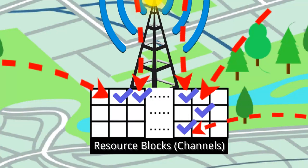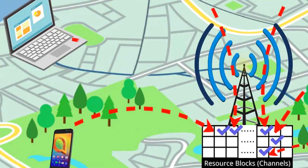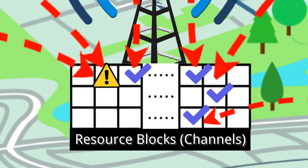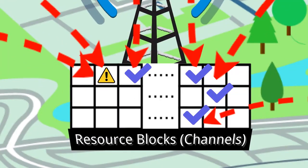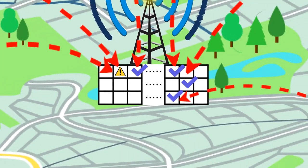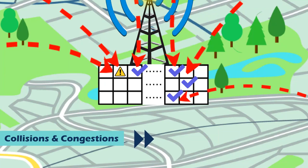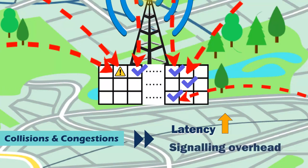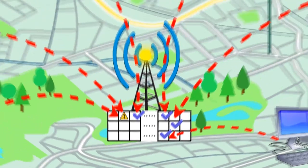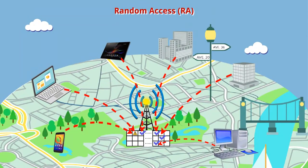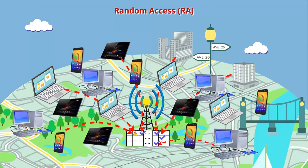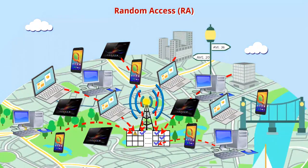But due to that, there is a high chance for two devices to request the same channel. This results in collisions and congestions in the control network. That's just the beginning of problems in random access. Ultimately, these collisions and congestions lead to higher latencies and higher signaling overhead. So it's clear that random access is not the best solution for machine type communication. Also, it's worth pointing out that when the number of devices increases, the problems only get worse.